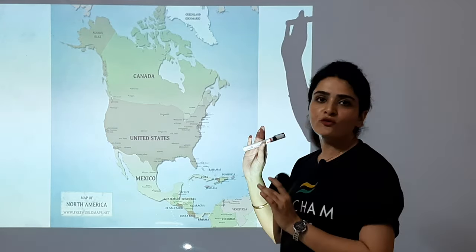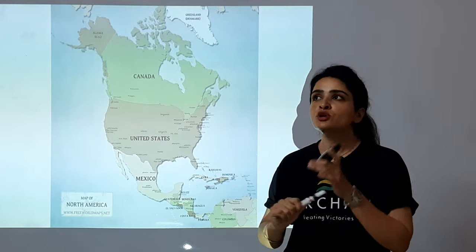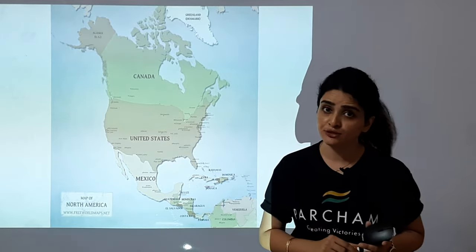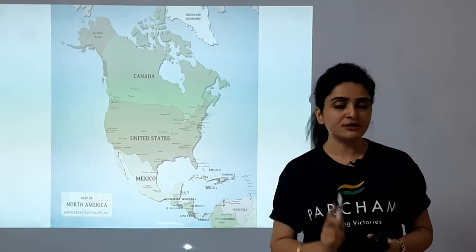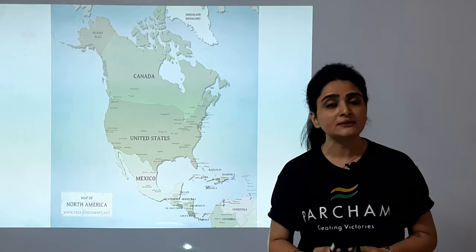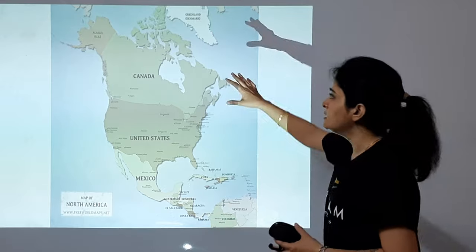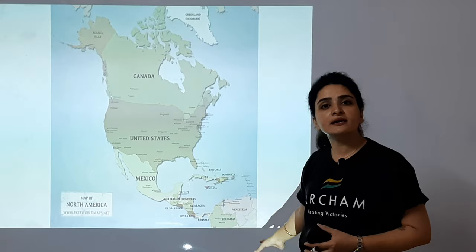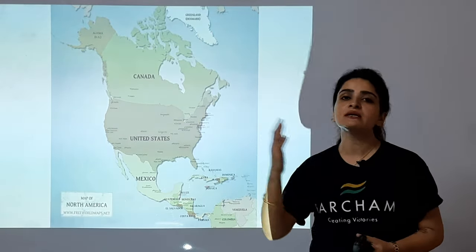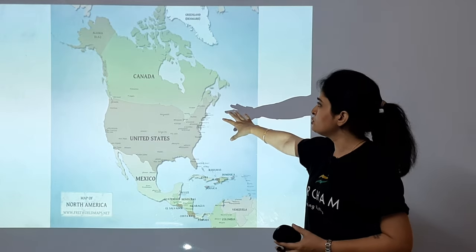Now moving over to North America. How many countries are in North America? Total 23 countries. If we talk about independent states or countries, 23 countries come under North America. There are two Americas — North and South America. Today we are taking the Northern part.